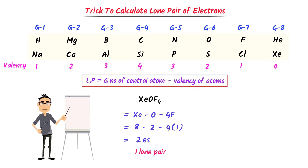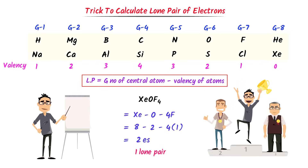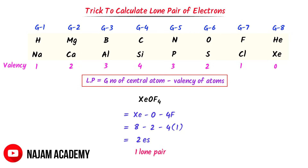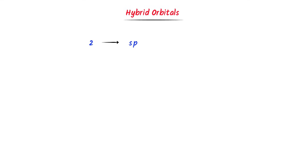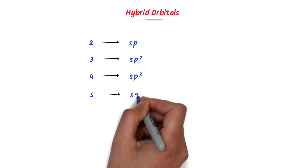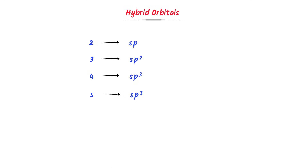If you have learned this trick, congratulations — you have already learned to find the hybridization of the central atom. Let me quickly teach you the concept of hybrid orbitals. If there are 2 orbitals, the hybridization is sp. If there are 3 orbitals, it is sp² (1s and 2p). If there are 4 orbitals, it is sp³ (1s and 3p). If there are 5 orbitals, it is sp³d (1s, 3p, and 1d).